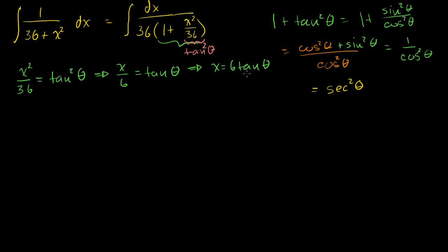If we take the derivative of both sides with respect to theta, we get dx/dθ equals 6 times the derivative of tangent of theta, which we need to figure out. So let's figure it out.